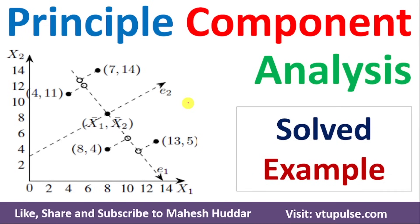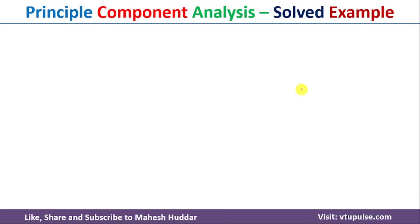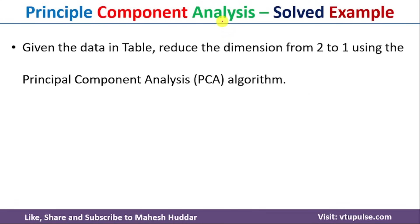Welcome back. In this video, I will discuss principal component analysis in machine learning with the help of a simple solved example. Principal component analysis is used for dimensionality reduction in machine learning. Whenever we have been given high dimensional data and we want to convert it into low dimensional data, we use principal component analysis. To understand it, we will take one simple example.